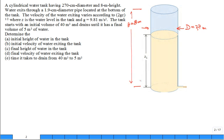Water exits through a 1.9 centimeter diameter pipe located at the bottom of the tank. Here's the smaller diameter pipe, we'll use lowercase d, and that's 1.9 centimeters or 0.019 meter diameter for that pipe. The velocity of the water exiting varies as the square root of 2gz.